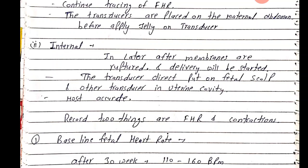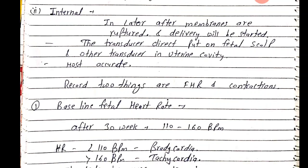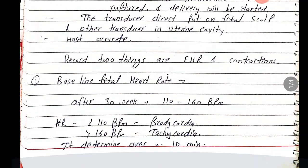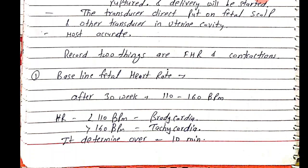Internal CTG is more accurate than external CTG. It records two things: fetal heart rate and uterine contractions. Now let's look at the baseline fetal heart rate.